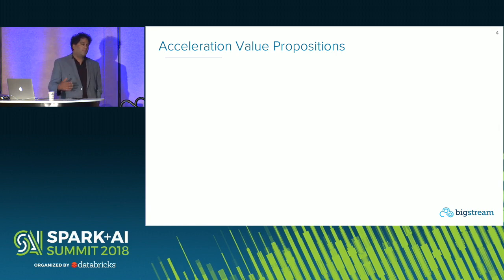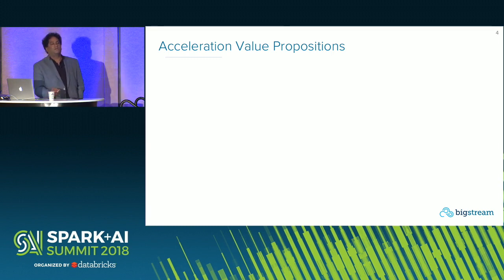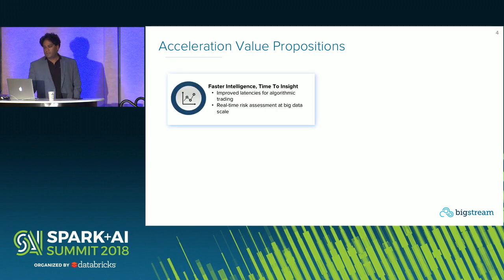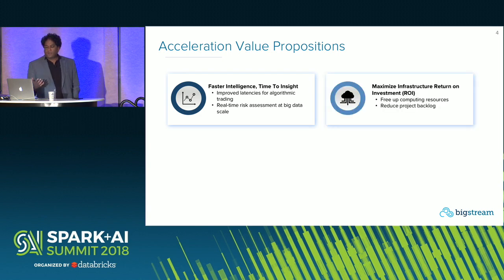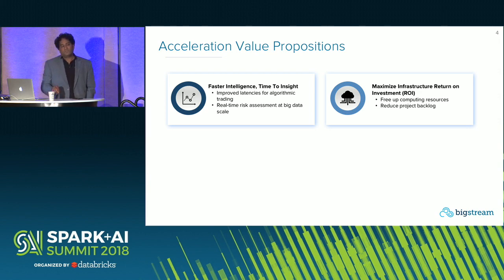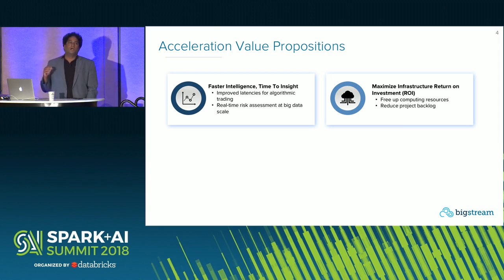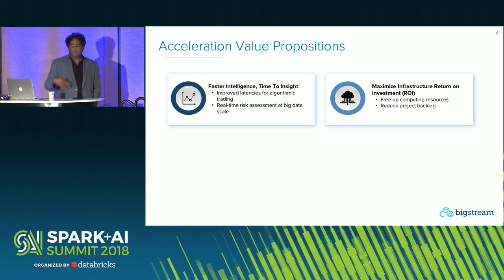In our research and proof of concepts, we've identified a number of value propositions to acceleration — and when I talk about acceleration here, I mean network, compute, and I/O all together. The first one is faster intelligence, faster time to insight. Your batch analytics run faster — instead of six hours, it takes two or one hour. The other argument is maximizing return on investment for your infrastructure, primarily a cloud argument, because you can scale your clusters down or they stay up for less time if accelerated. On-premise, we're finding people want to do more with their existing infrastructure.